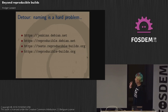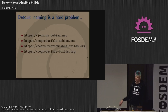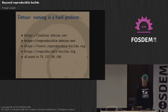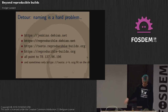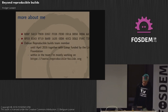This talk will talk a lot about these names. We started having this Jenkins instance, then made a reproducible Debian net, and now turned it into Reproducible Builds org. They are all on the same system — it is all the same. Sometimes it is only rb.org on the slides because else it didn't fit.